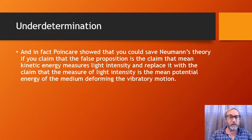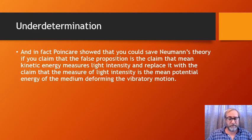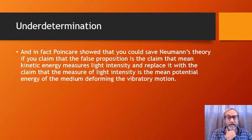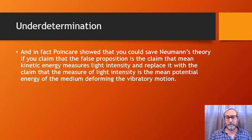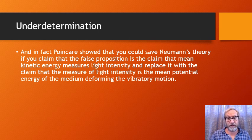In fact, another scientist was able to save Neumann's theory by deciding a different assumption was the bad egg: the claim that mean kinetic energy measures light intensity. Instead, if you claim that the measure of light intensity is the mean potential energy of the medium — the ether — through which the vibratory motion moves, you change one auxiliary assumption rather than the one Wiener was trying to disprove, and Neumann's theory is saved.